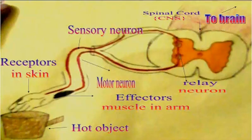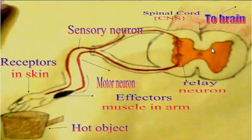For example, in bright light the pupils of our eyes get smaller — the reflex action protects the retina from damage because of too much light. Similarly, coughing is another example of reflex action which clears our windpipe. Some other examples of reflex actions are knee jerk, blinking eye, yawning, movement of diaphragm, sneezing, etc. Therefore, reflex action can be defined as an unconscious and involuntary response of the muscles or glands to a stimulus. Reflex action is an automatic process.